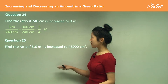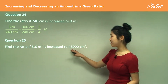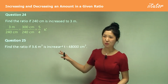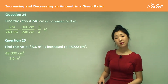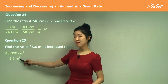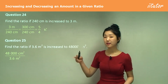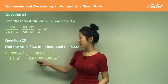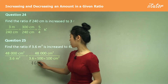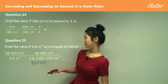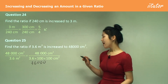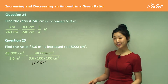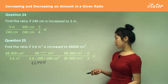Question 25: find the ratio if 3.6 meters squared is increased to 48,000 centimeters squared. New over old. To change meters squared to centimeters squared, multiply by two lots of a hundred — moving four decimal places to the right — so 3.6 becomes 36,000 centimeters squared. Cancel out the zeros, then find the common factor between 48 and 36, which is 12, giving 4 on 3.